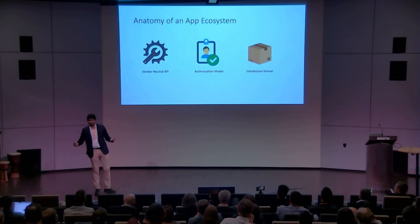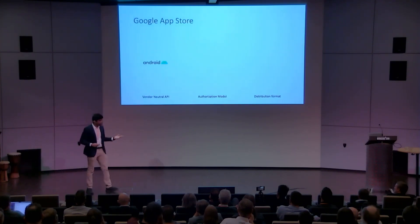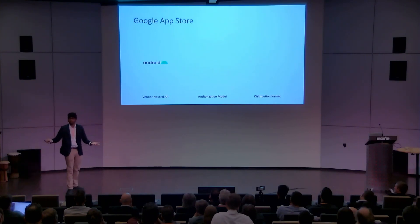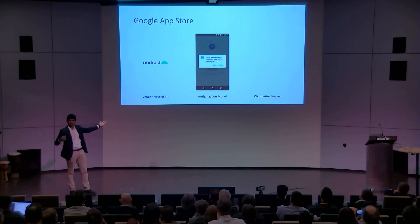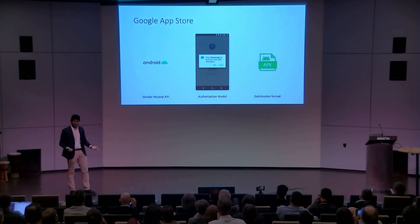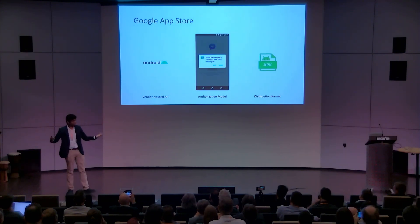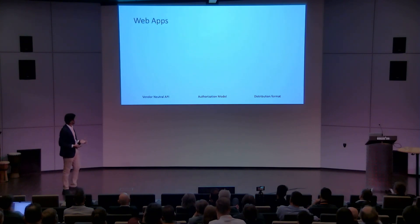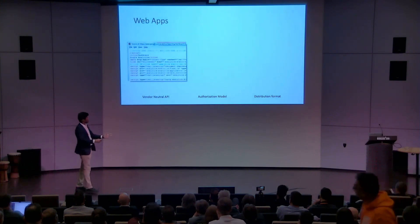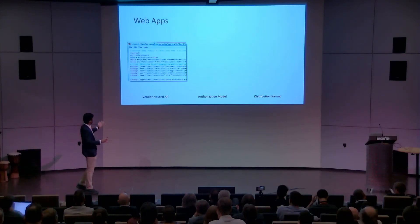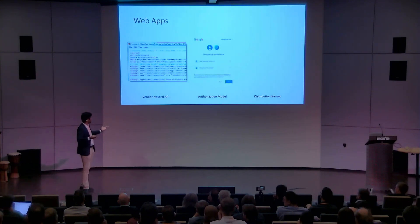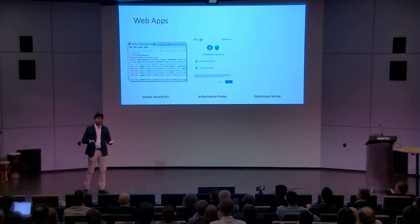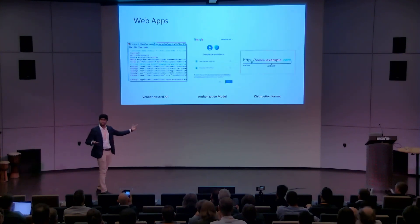Take Android as an example: you have the Android vendor-neutral system APIs, the authorization model — you've seen that when installing apps — and the distribution format is an APK. Web apps also have a solid application model: HTML, CSS, JavaScript running on any vendor-neutral browser, OAuth 2.0 as the standard for authentication and authorization, and the distribution format is just a URL.